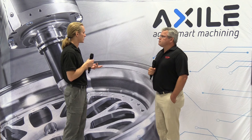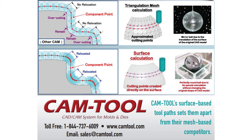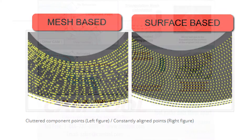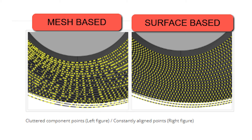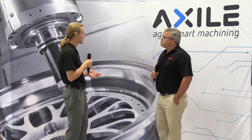There are big players in the CAM scene — Mastercam, Siemens, Tebis. What sets CAM Tool apart? Our tool paths are based right off the surface — a surface offset — whereas most CAM competitors use a mesh thrown over the model and then place points along that model. This can increase tool life, reduce cycle time, and save wear and tear on the spindle through smooth tool paths.